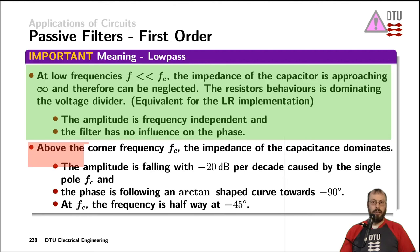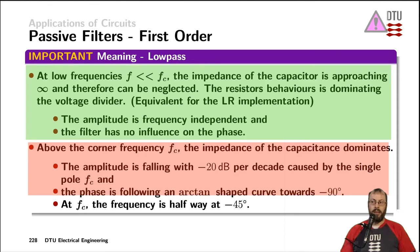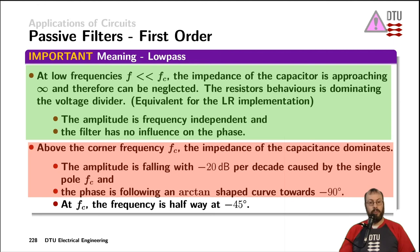In the stopband — at frequencies above the corner frequency — the impedance of the capacitor drops and it starts to act as a short circuit. The higher the frequency, the closer we get to a perfect short circuit, so less signal appears at the output and all the input voltage is applied across the resistor. The amplitude of the output voltage falls at minus 20 dB per decade, and the phase shifts to minus 90 degrees caused by the capacitor. At the corner frequency, the phase is halfway at minus 45 degrees — exactly where the pole is located.